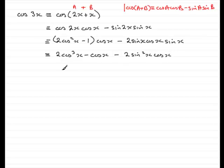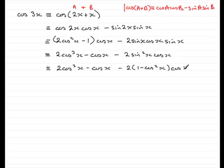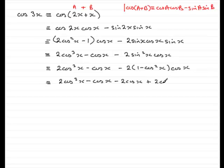Now, sin²(x) we should know is 1 minus cos²(x). So what I need to do now is replace this with 1 minus cos²(x). Don't forget, we've got that cos(x) on the end there. So write out the first two terms again, minus the cos(x). Now expanding this bracket: we've got minus 2cos(x) times 1, which is minus 2cos(x), and then minus 2cos(x) times minus cos²(x), that's going to be plus 2cos³(x).